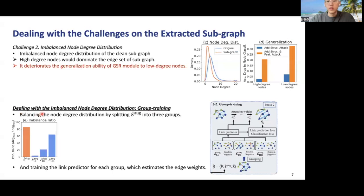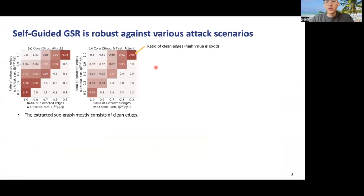We deal with this issue by a group training strategy, where we balance the node degree distribution by splitting the edges of the clean subgraph into several groups, which results in a lower imbalance ratio for each group, as shown in Figure E. Then we train a link predictor for each group, which serves as an estimator of edge weights. Since the link predictor is trained on a more balanced group, the group training strategy enhances the generalization ability to low-degree nodes.